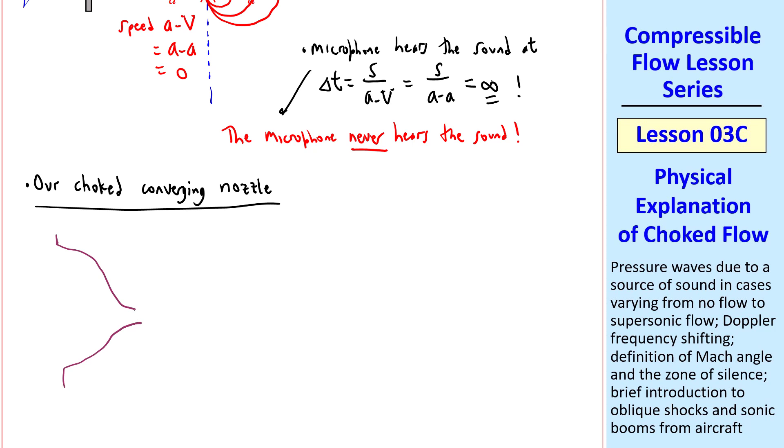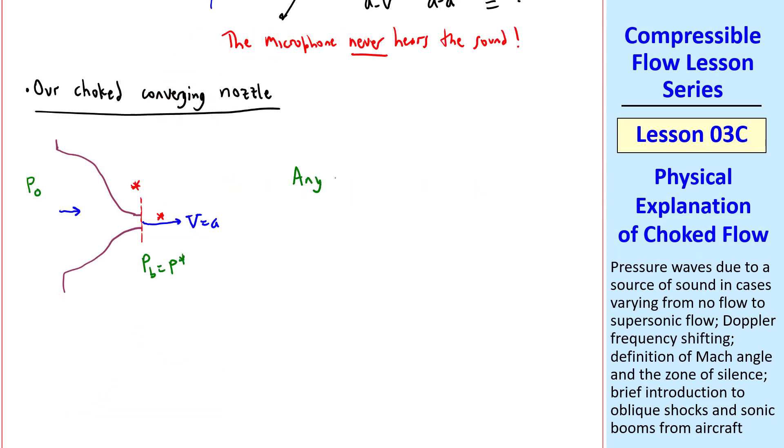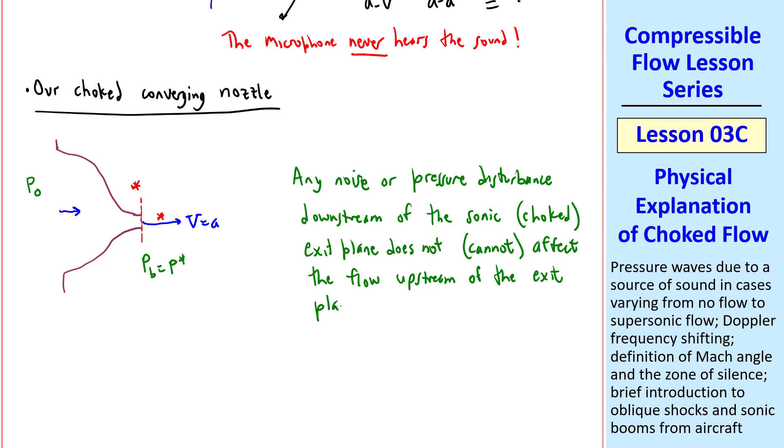This case is analogous to our choked converging nozzle of the previous lessons. Namely, flow from a large tank through a converging nozzle. For the case where Pb is exactly equal to P star, and the flow is coming out sonically, V equal A. If we put some source of sound here, the sound will travel downstream, just like we had sketched here, but it can't travel to the left upstream. That's why we call this the sonic or critical conditions. And the flow in here is choked, meaning that any disturbances down here can't affect the flow. I'll write this out as follows: Any noise or pressure disturbance downstream of the sonic or choked exit plane cannot affect the flow upstream of the exit plane. That's why we have choked flow. And I'll make a small caveat here, as long as Pb back pressure stays less than or equal to P star, and we're assuming constant P-naught in this case.